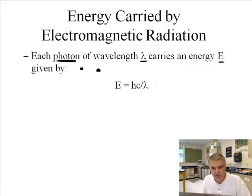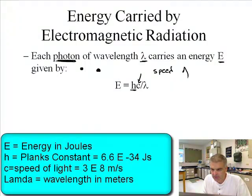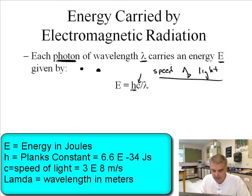So E is equal to HC over lambda. Now, H is something you haven't seen. C, of course, is the speed of light, right? Speed of light. I like that word, light speed. Oh, isn't that like a beam me up, Scott? All right. And lambda is the wavelength, right? And this has to be in meters.